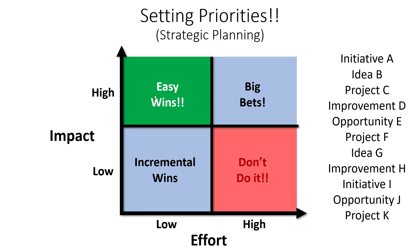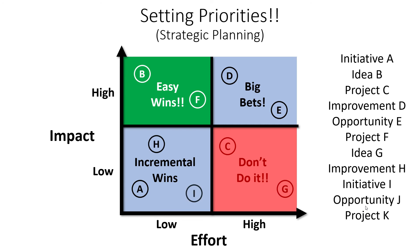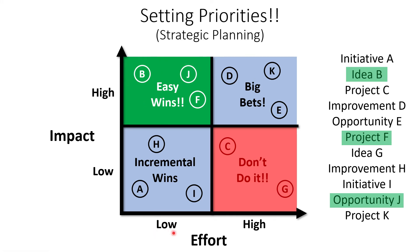Once you understand this quadrant, you can take all those different ideas, initiatives, projects, and improvement opportunities you came up with — let's say you created 10 or 13 different initiatives — and sit down as a team to rank all of these projects based on their impact to the organization and the amount of effort required. You can take this list and quickly identify your priorities. For example, idea B, project F, opportunity J — these are all top priorities, things we need to focus on immediately. What we've done is taken our vision, translated it into a strategic plan, and established our priorities.